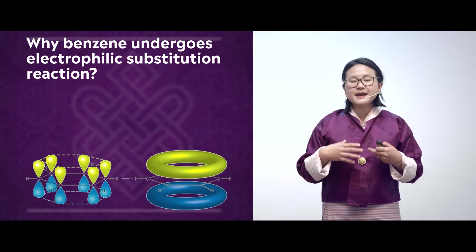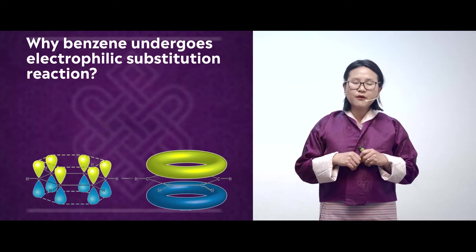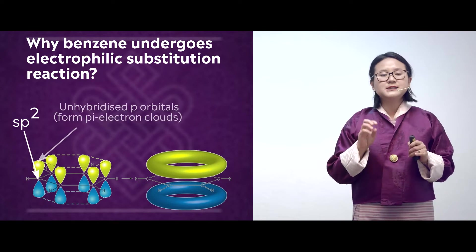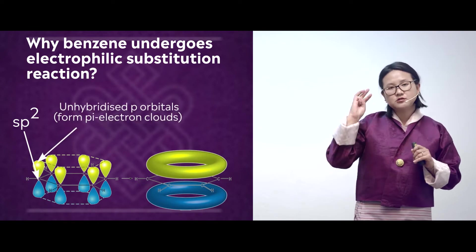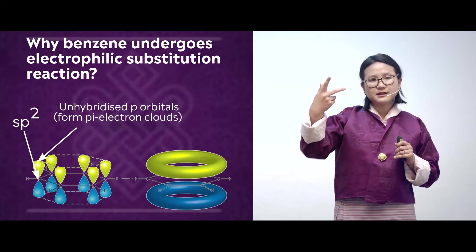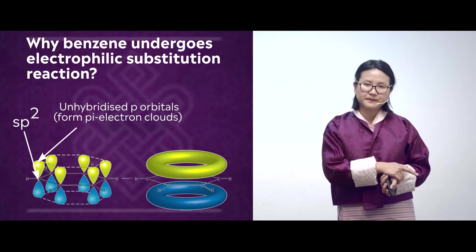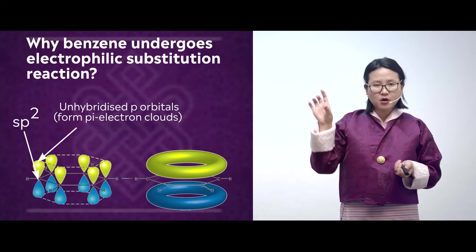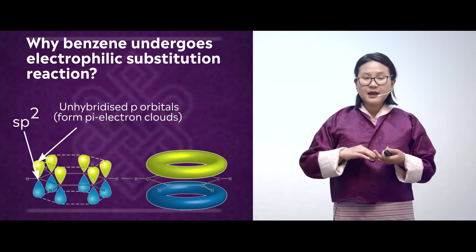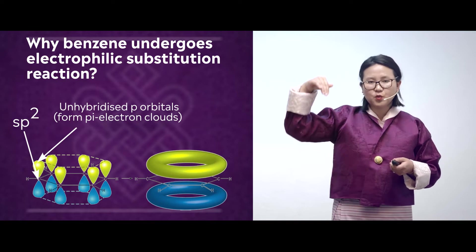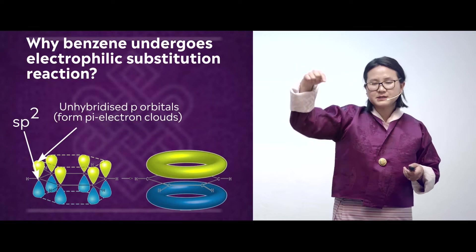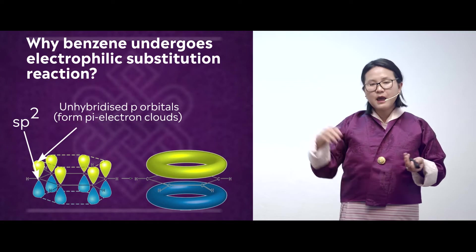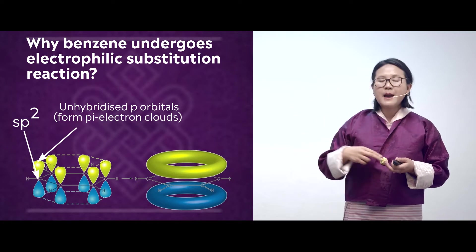In order to understand this, let's look at the structure of benzene. In benzene there are six carbons, all of which are sp2 hybridized. Each carbon has three sigma bonds — two with adjacent carbons and one with a hydrogen. Each carbon still has one p orbital which remains unhybridized. This p orbital is going to overlap sideways with the carbons on either side, resulting in formation of two sets of pi electrons.